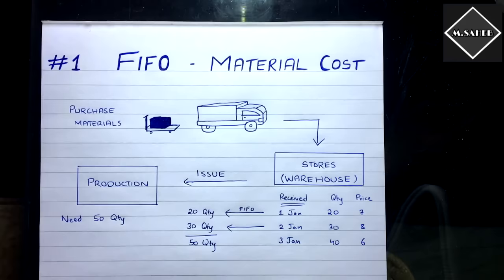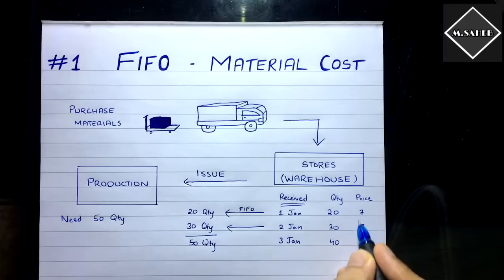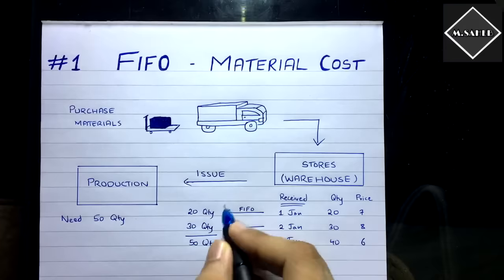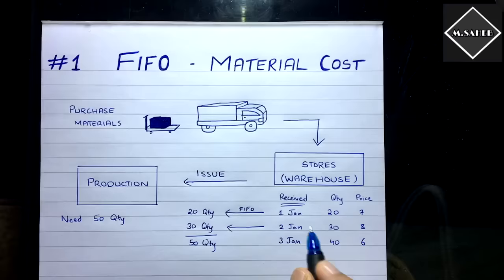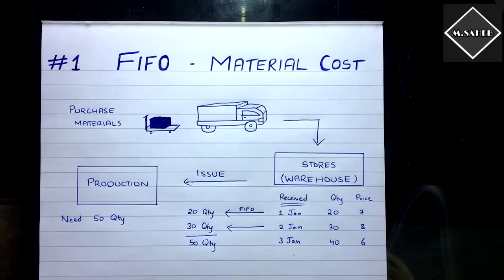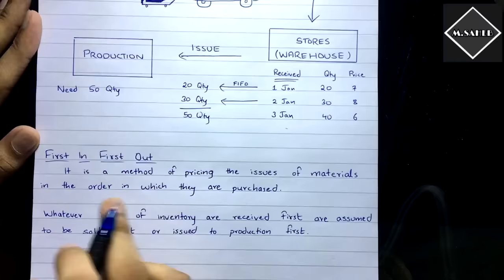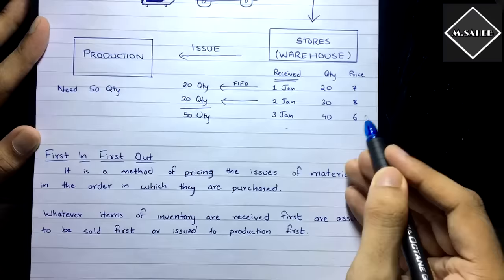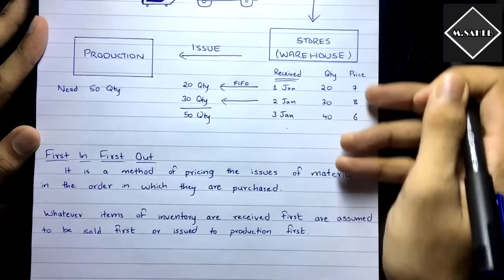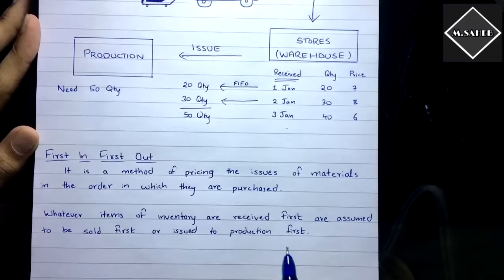Here we are not just taking quantities in that order — the price also follows that order, and that is the valuation. That is how inventory is valued under FIFO. Whatever we purchased first from the supplier, in that same order we send it out to the production department. There is also LIFO, which is exactly the opposite — we'll see that later. FIFO is a method of pricing the issue of materials in the order in which they are purchased.